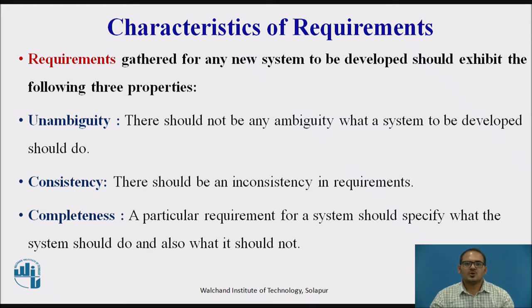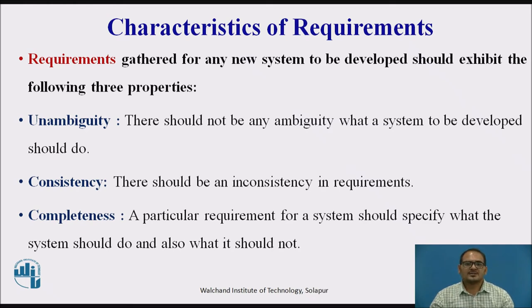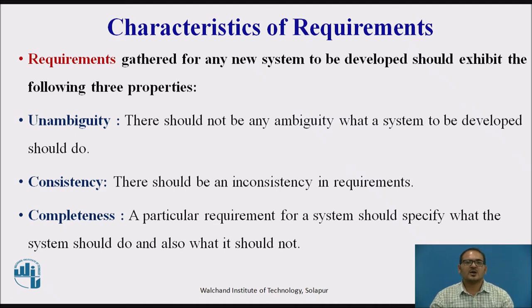Consistency: to illustrate this, consider the automation of a nuclear plant. Suppose one of the clients says that if the radiation level inside the plant exceeds R1, all reactors should shut down. However, another person from the client side suggests that the threshold radiation level should be R2. Thus, there is an inconsistency between the two end users regarding what they consider as a threshold level of radiation.